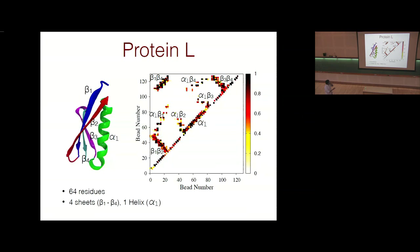Another way of visualizing the folded structure is using a contact map. Each amino acid has a backbone group and a side chain group. Coarse-graining each amino acid gives two effective beads — one for backbone atoms and one for side chain atoms — yielding 128 beads for the 64-residue protein. In the contact map, bead numbers are on both axes, and a data point appears when two beads in the folded structure are within a cutoff distance of 8 angstroms. Contacts along the diagonal are between residues close along the chain contour.